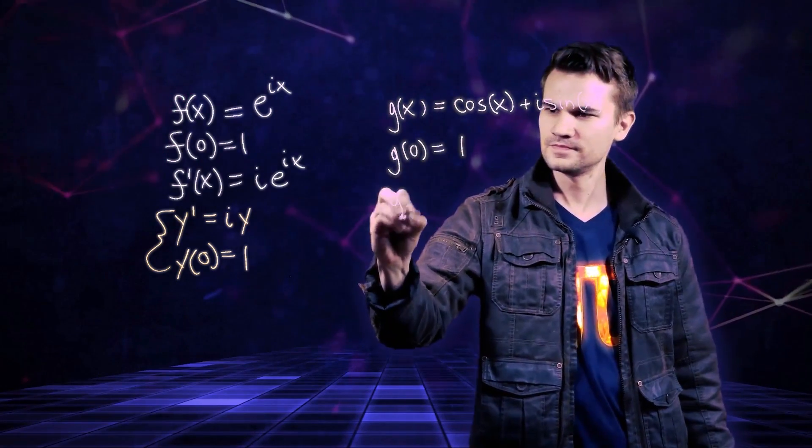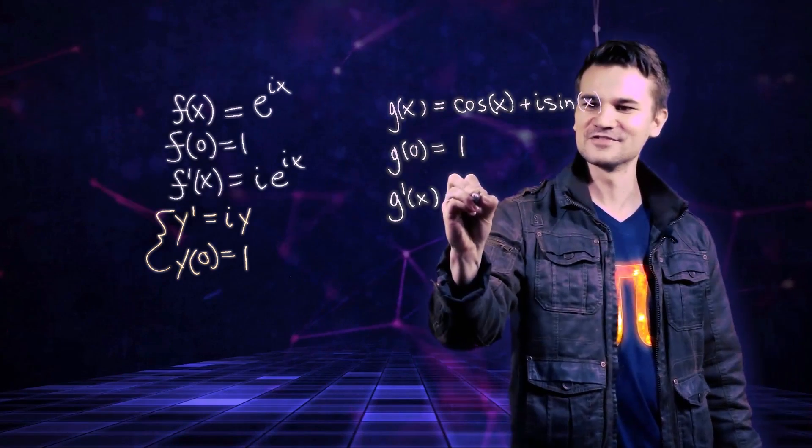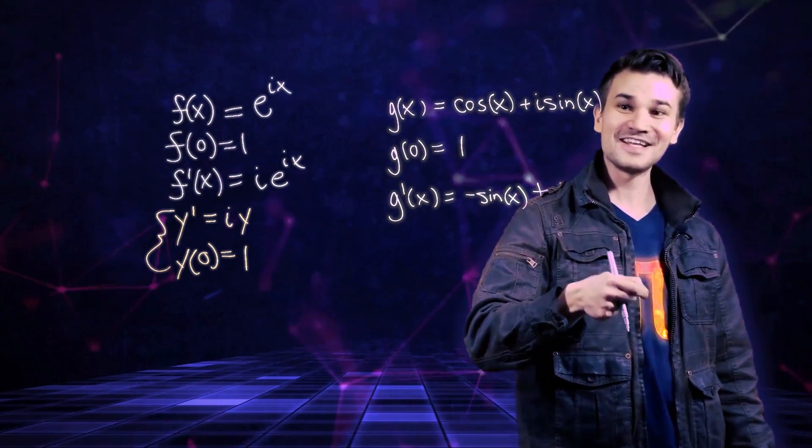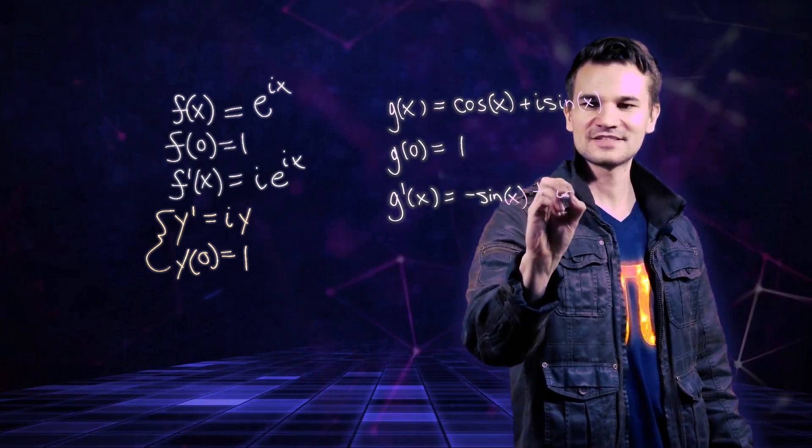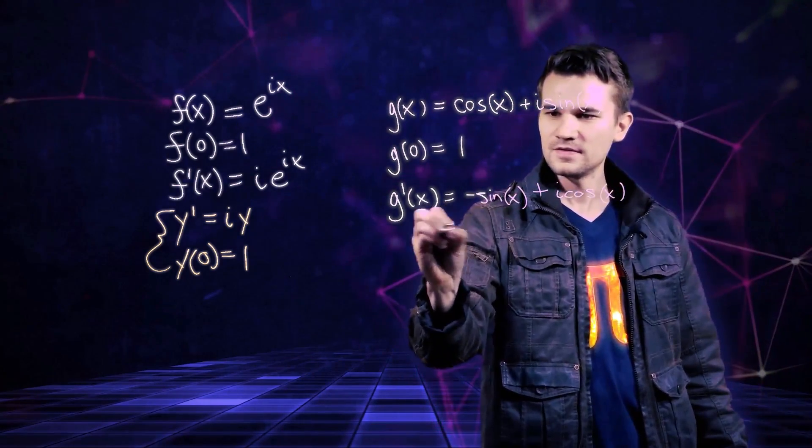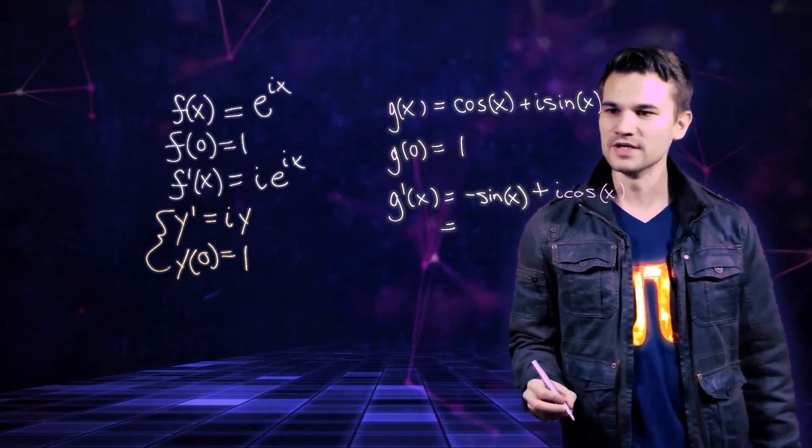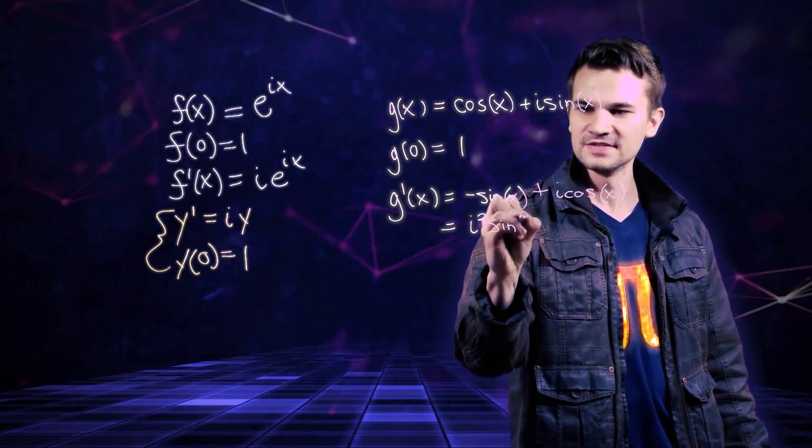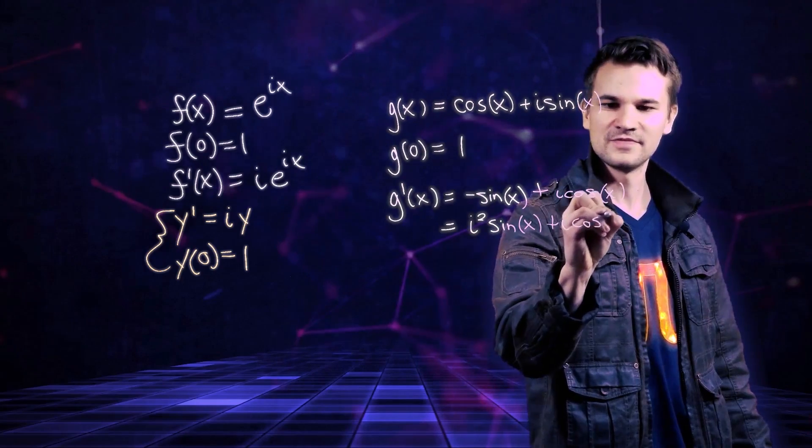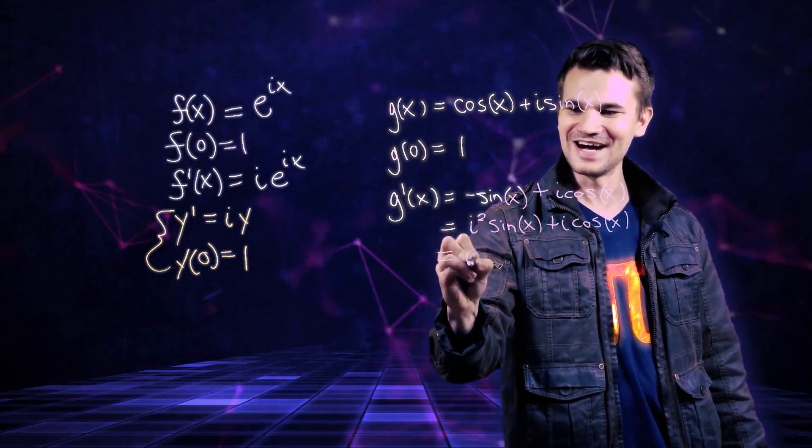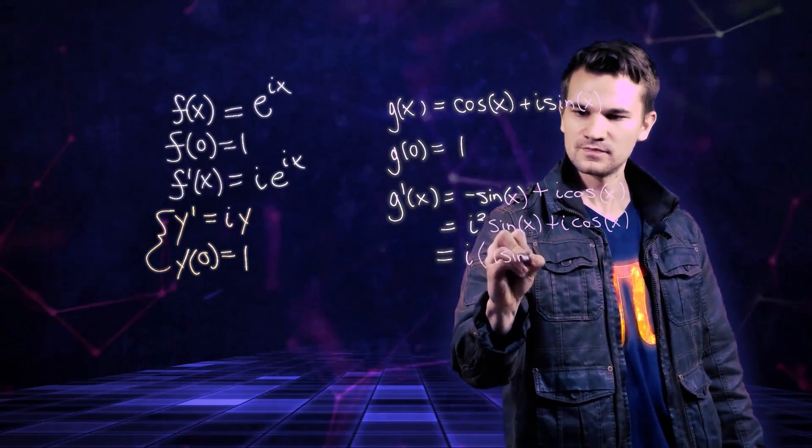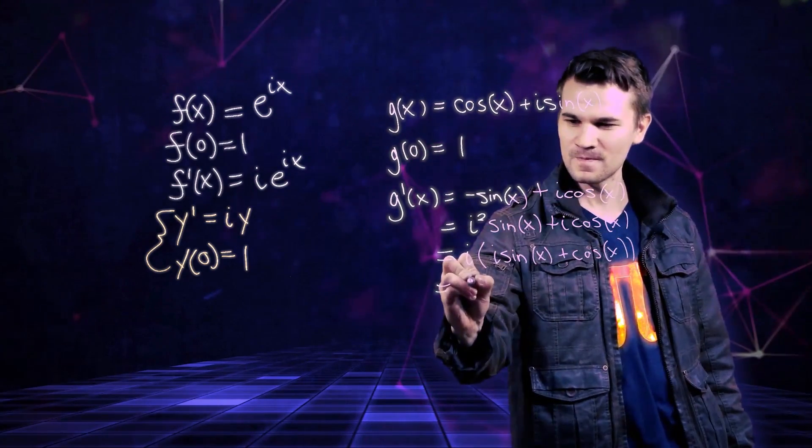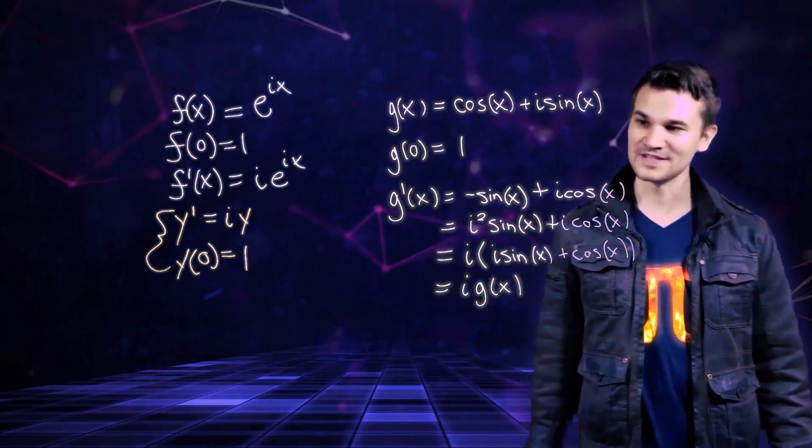Now let's take the derivative. Derivative of cosine is negative sine, derivative of i sine x is i cosine x. Now this negative is a negative 1, so I can write that as i squared sine of x plus i cosine of x, and we factor out an i and that is indeed the function we started with.